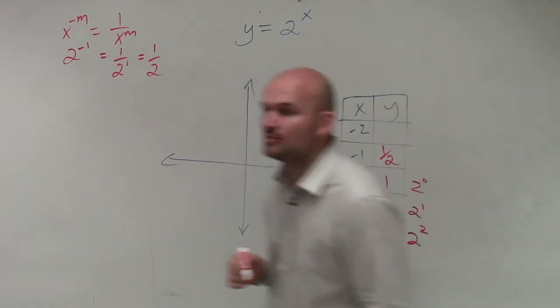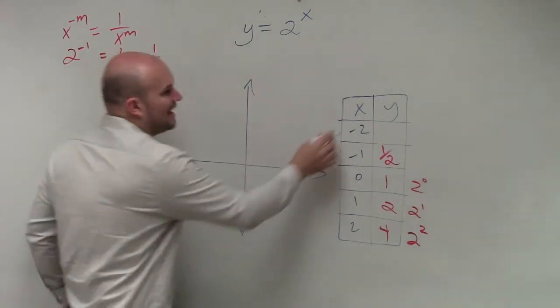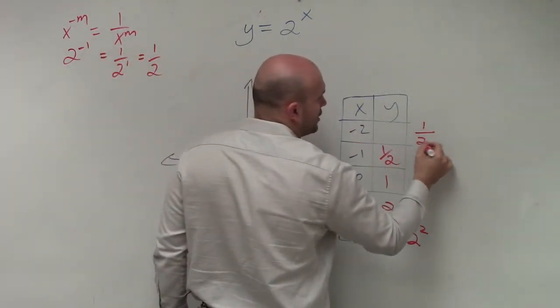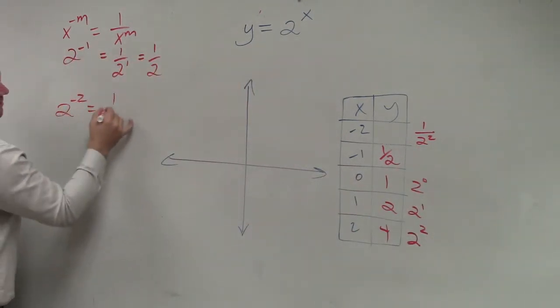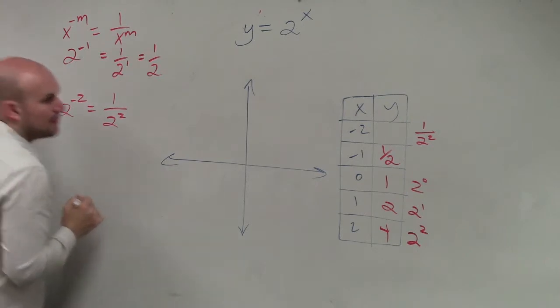So negative 1 is actually going to produce 1 half, and negative 2 is actually 1 over 2 squared. Right? Would you guys agree with that?